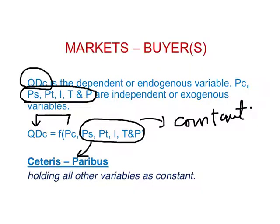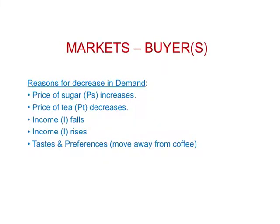Now there are some reasons for a decrease in demand. Why would you buy fewer cups of coffee at each given price? One reason could be: if you like sweet coffee and the price of sugar increases, the cost of coffee for you is the cost of black unsweetened coffee plus the price of sugar. So when the price of sugar goes up, the cost of consuming coffee has gone up, and we will start to buy fewer cups of coffee. This could be one of the reasons.